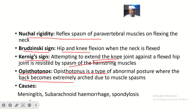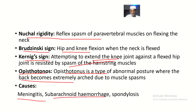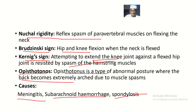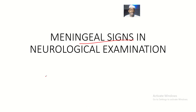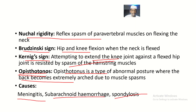Some medical conditions to suspect when any of these signs are positive include meningitis, which is inflammation of the meninges, and subarachnoid hemorrhage, which is bleeding in the subarachnoid area. Also spondylosis, which is degeneration of the intervertebral discs — where the discs are wearing away or their structure is breaking down. Any of these conditions can cause these signs; for example, spondylosis can cause opisthotonus due to arching of the back.